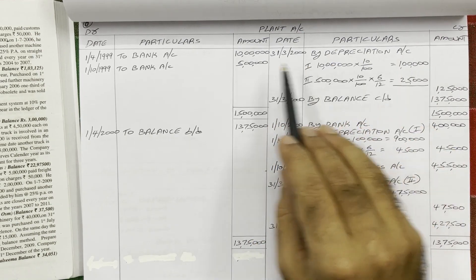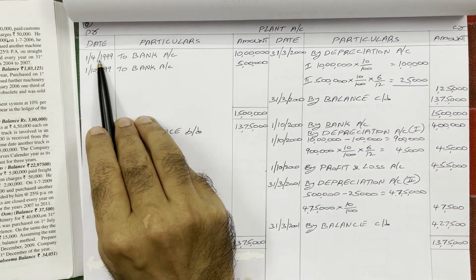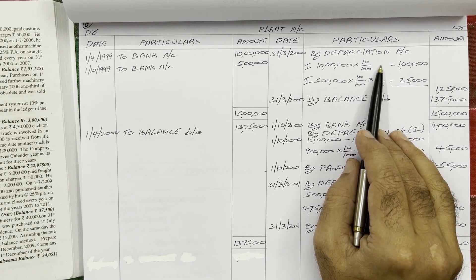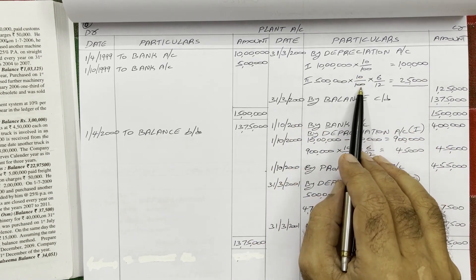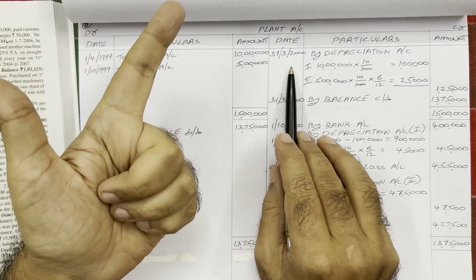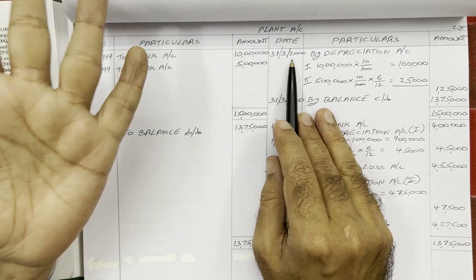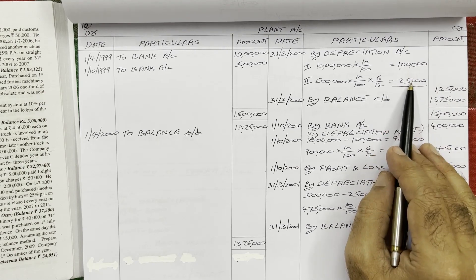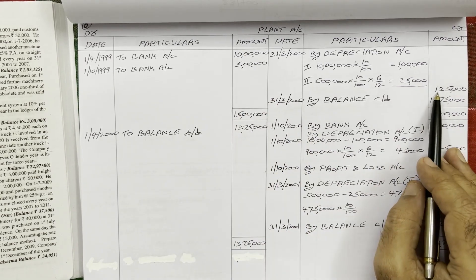At year end 31st March 2000, we provide depreciation on both assets. For the first asset, cost is 10 lakh rupees. Purchased on 1st April, so full year used — 10% of 10 lakh = 1 lakh rupees. For the second asset, cost is 5 lakh rupees, purchased on 1st October. They used it for six months: October, November, December, January, February, March. So 5 lakh × 10% × 6/12 = 25,000. Total depreciation in outer column: 1 lakh 25,000.